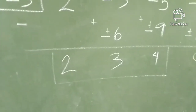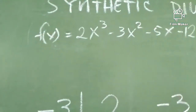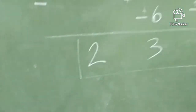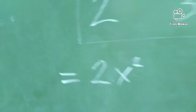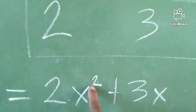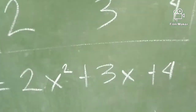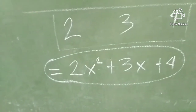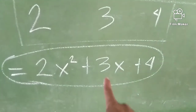Ngayon, ang susunod na gagawin natin is tignan natin yung degree of polynomial niya dito. Ilan yung highest niya? It's 3. Bawasan natin ang isa. And then, ilagay natin yung mga constant niya. So, we have 2x — 3 ito kanina, so bawasan natin ang isa, magiging 2. And then, plus 3x — binawasan ko ng isa yung kanyang exponent, kaya x na lang siya. And then plus 4. Ito na yung ating sagot. I advise all of you na pakisuyong i-compare kung tama ba yung sagot natin kanina dito sa sagot nating ito.